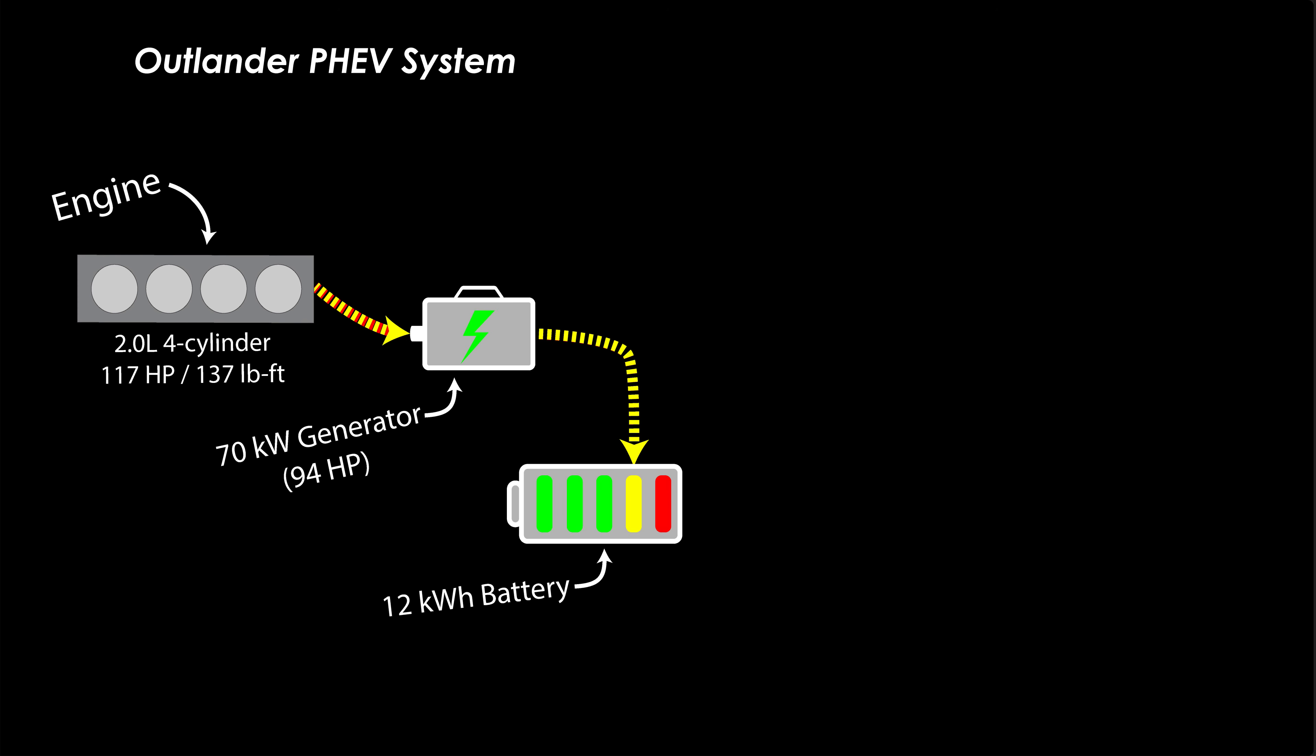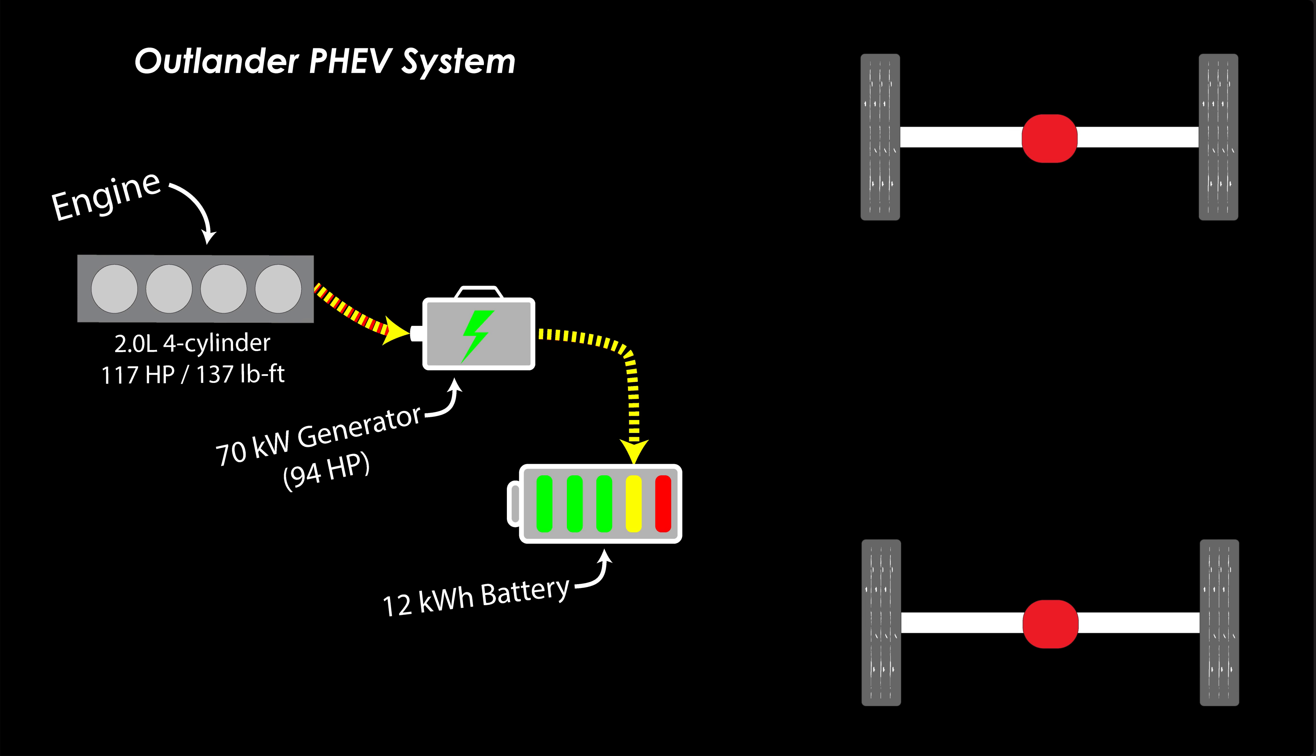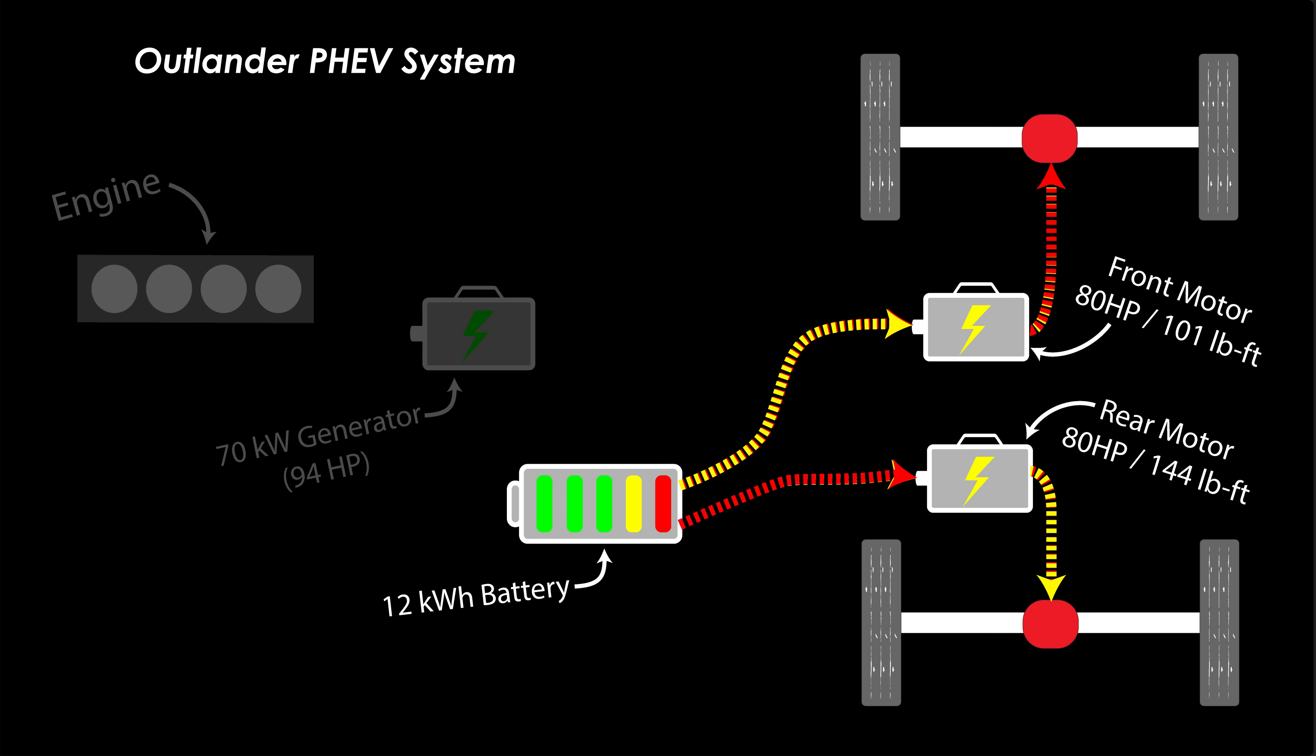Electricity from the generator flows into the 12 kilowatt hour lithium ion battery pack under the car. To move the car forward, Mitsubishi uses two independent electric motors. Both motors are rated at 80 horsepower, but the torque rating is actually a little bit different, with the rear motor making about 30% more torque than the front. The Outlander can power one or both motors from the battery alone up to about 60 kilowatts total, or 80 horsepower maximum.